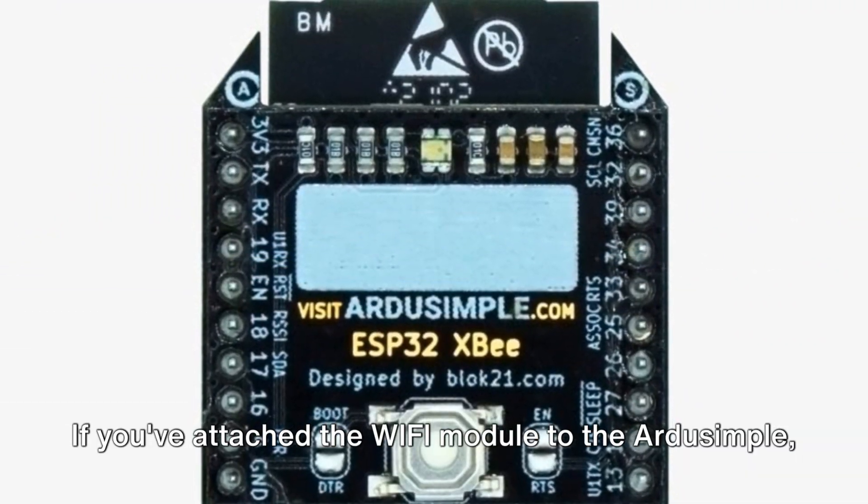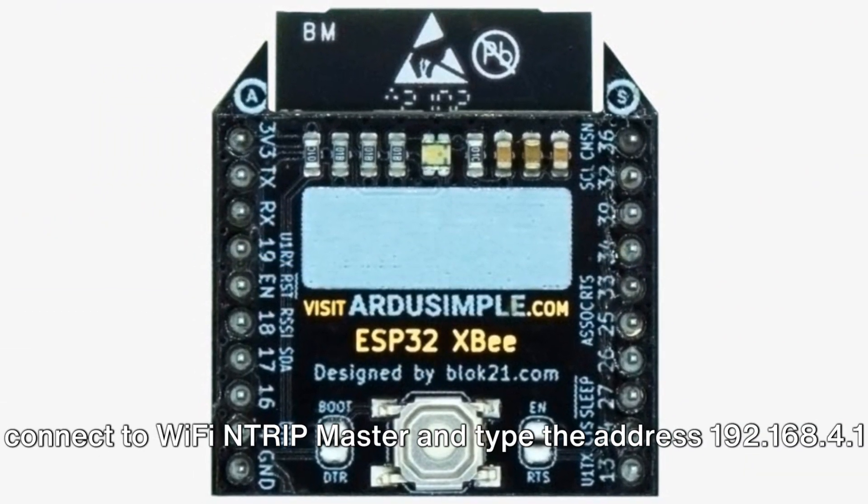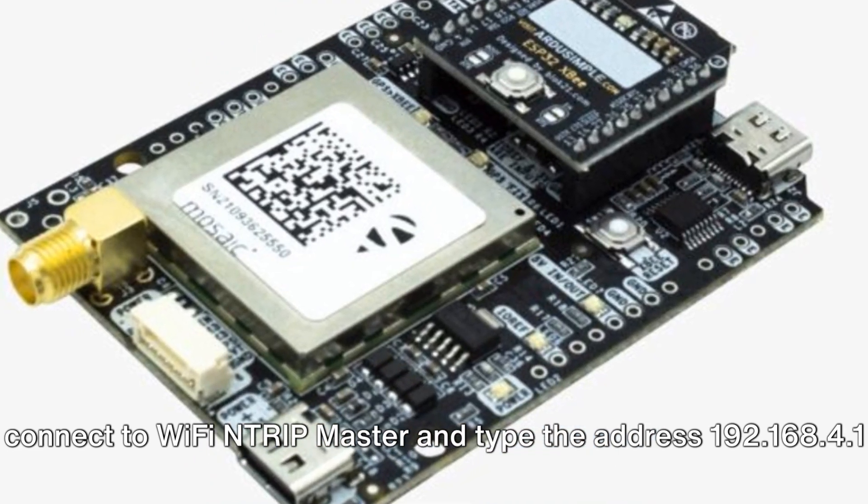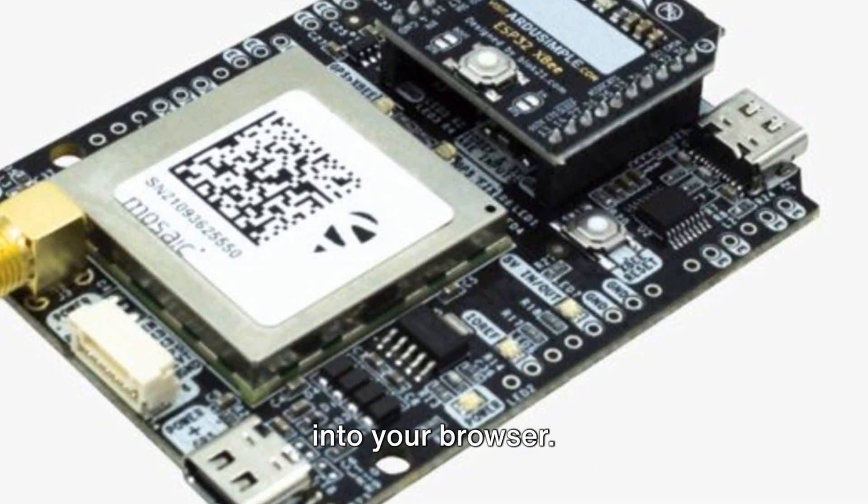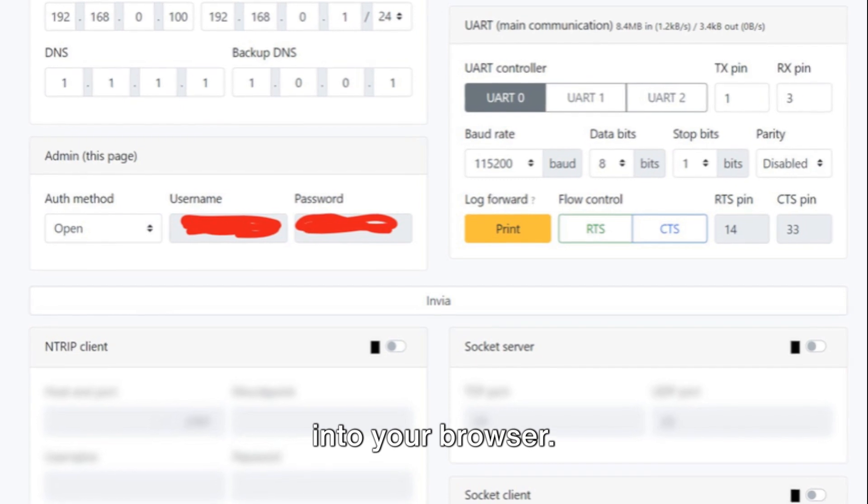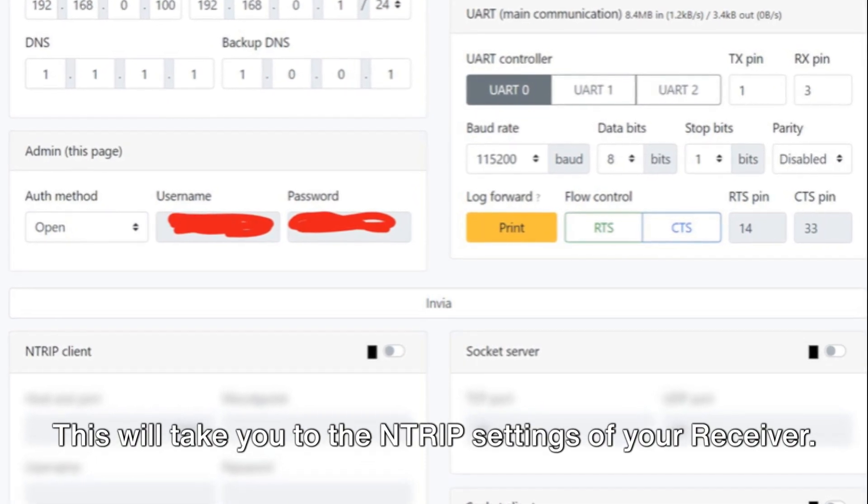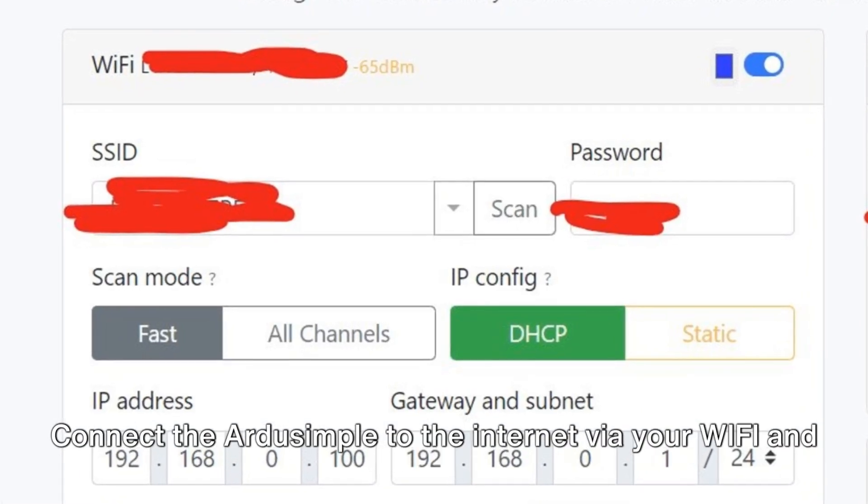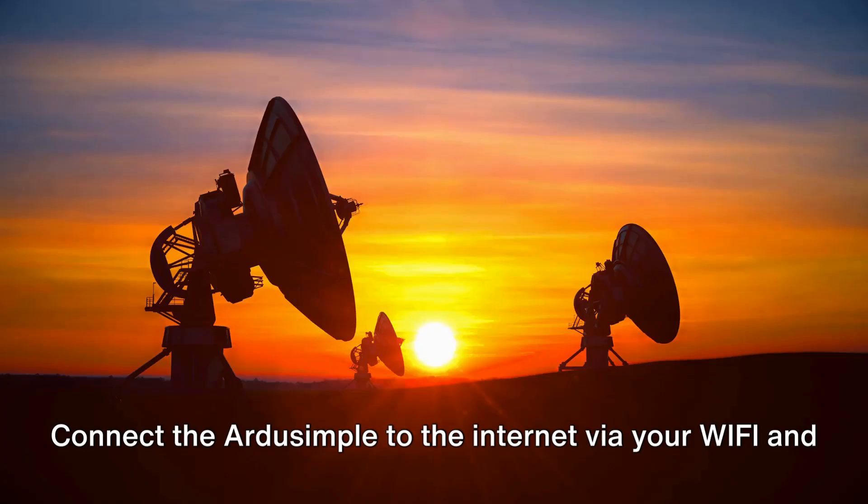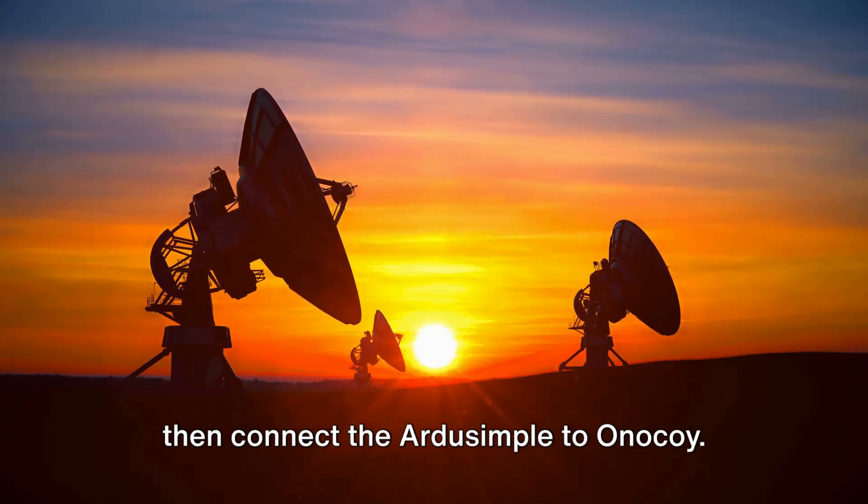If you have attached the WiFi module to the ArduSimple, connect to WiFi Entrip Master and type the address 192.168.4.1 into your browser. This will take you to the Entrip settings of your receiver. Connect the ArduSimple to the internet via your WiFi, then connect the ArduSimple to Onokoi.